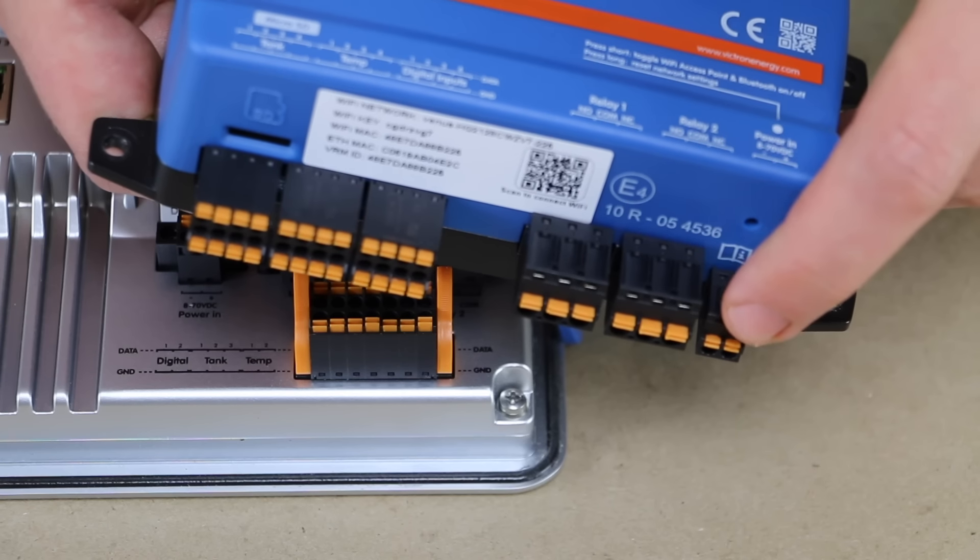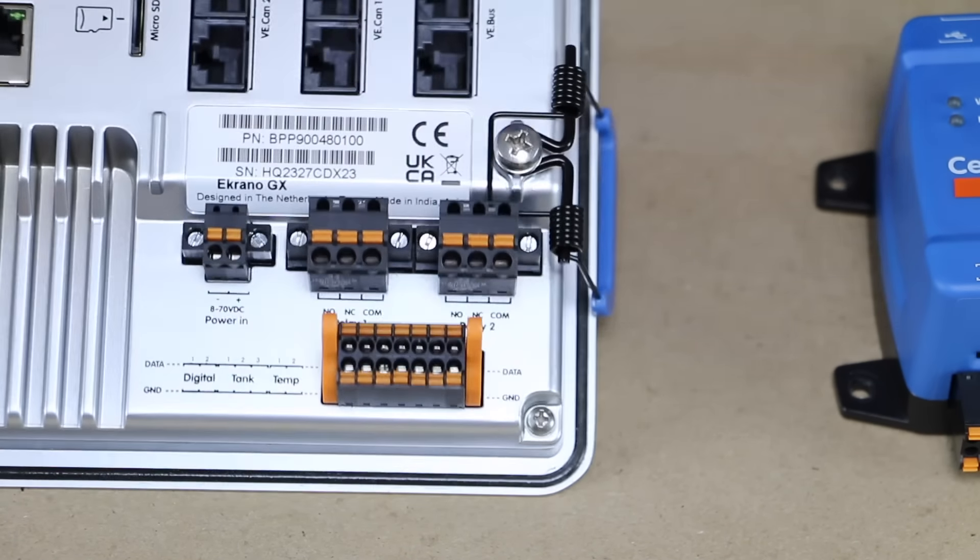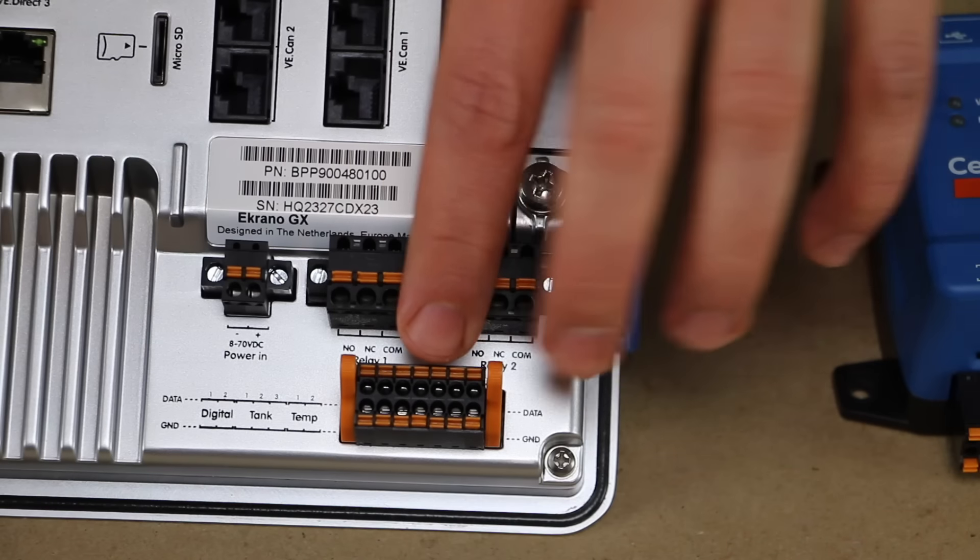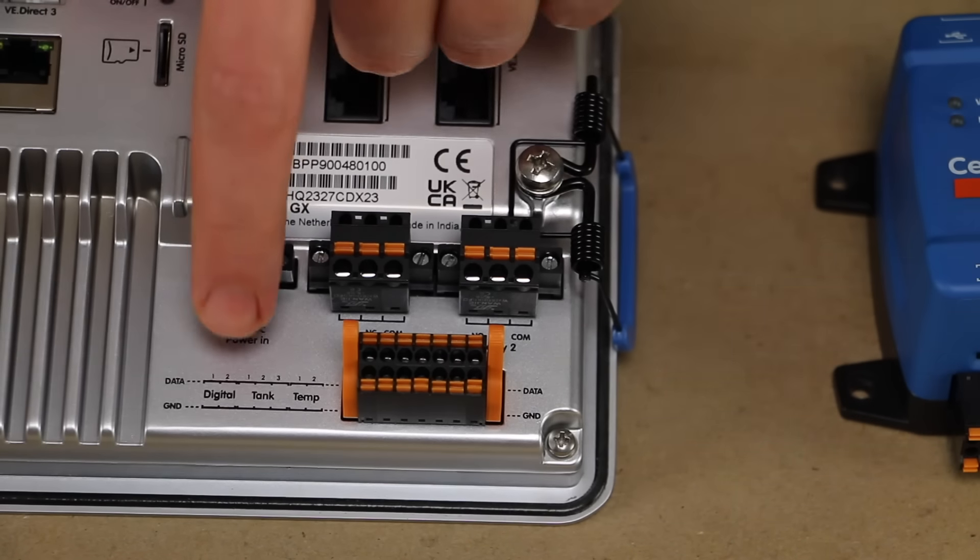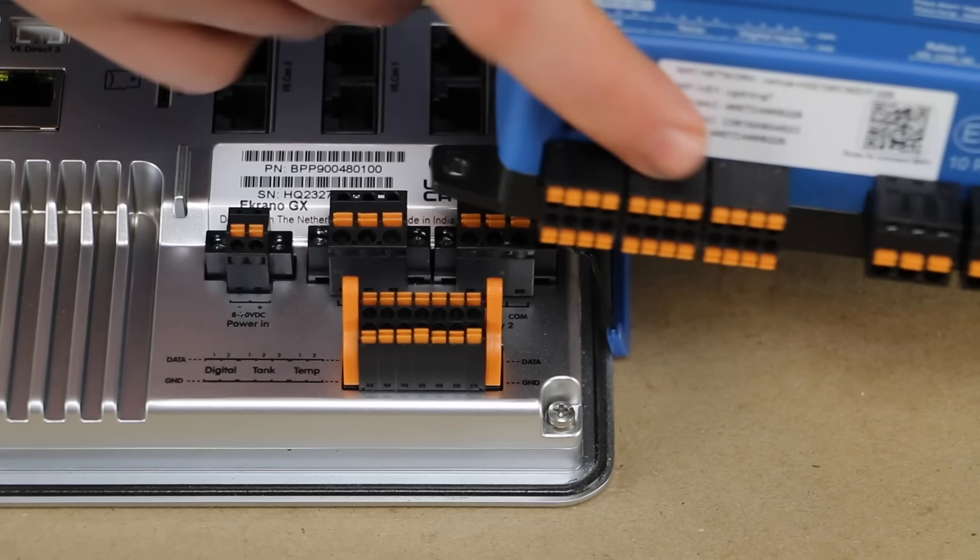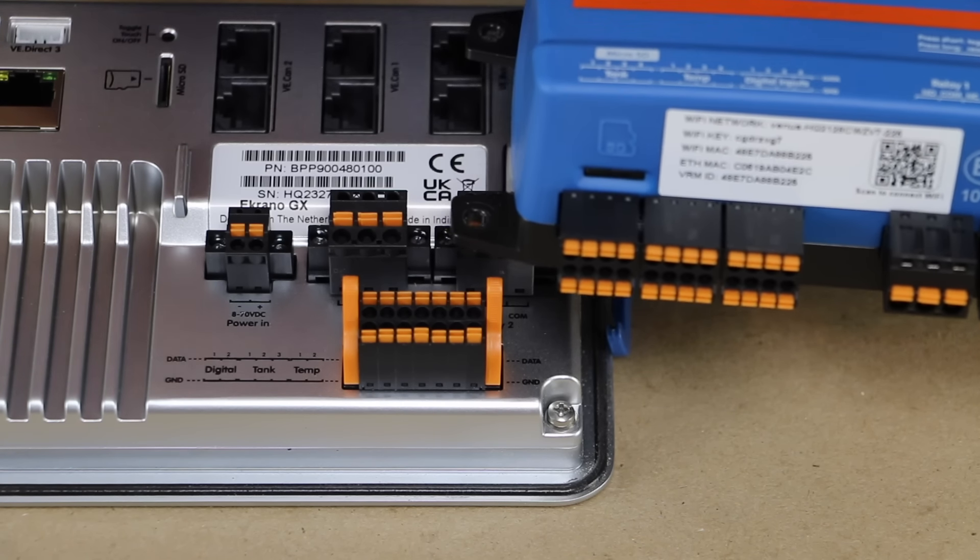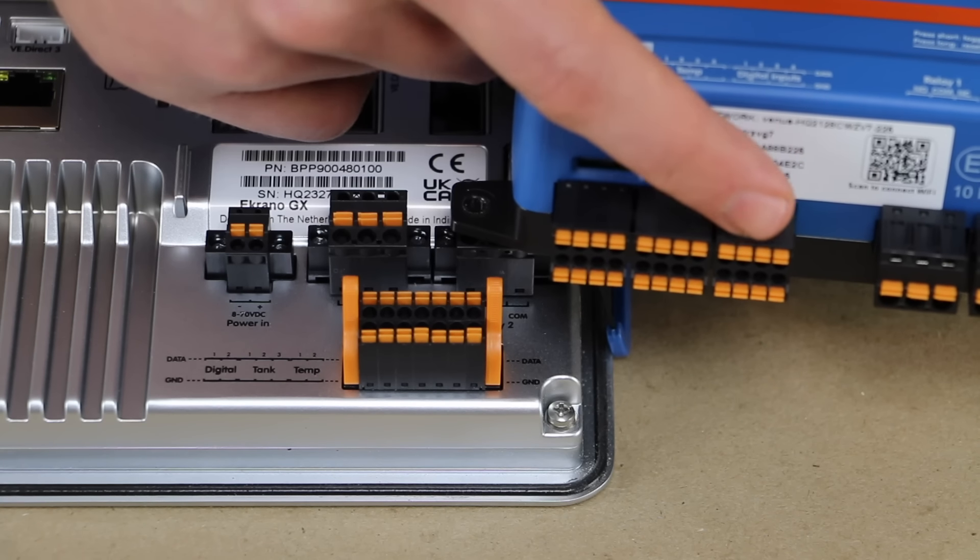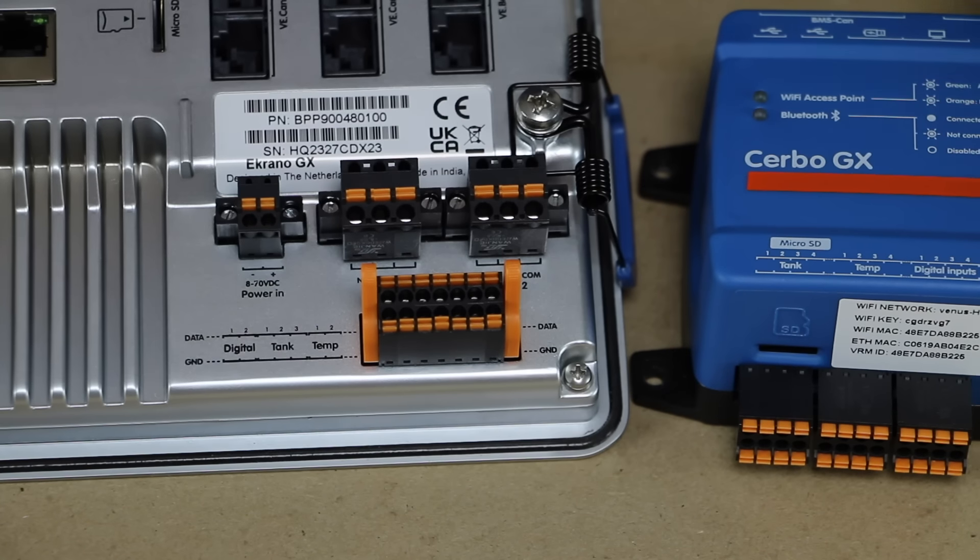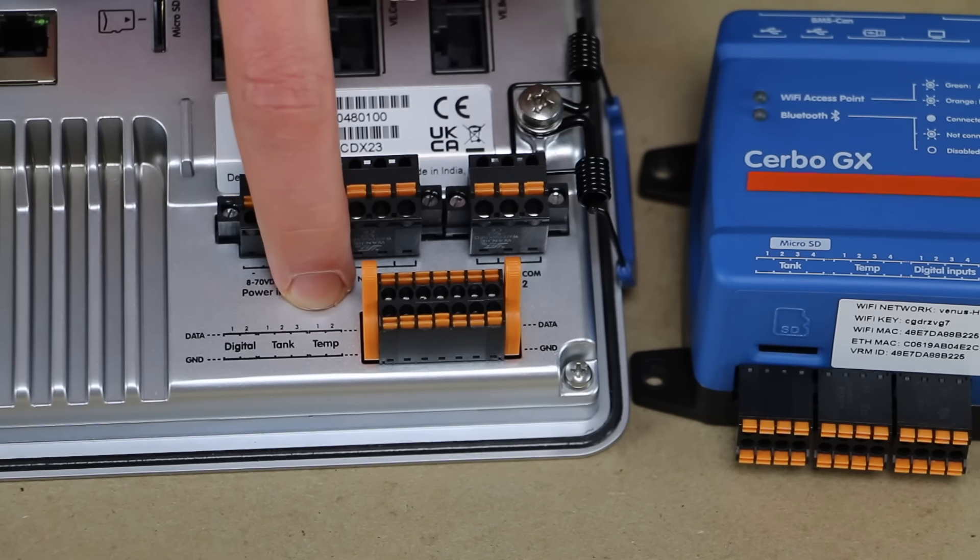Let's hop to the power port here. This takes between 8 and 70 volts DC on the Serbo. We have the same port on the Ekrono. Let's hop down to the inputs here at the bottom and it says digital, tank, and temp. We also have those inputs here on the Serbo. They say tank, temp, and digital inputs. So we have four tank, four temperature, and four digital on the Serbo. And then on the Ekrono, we actually have less. So we have, looks like two digital, three tank, and two temperature.